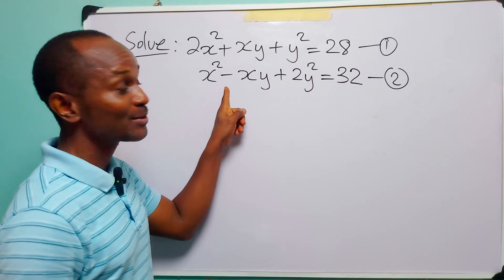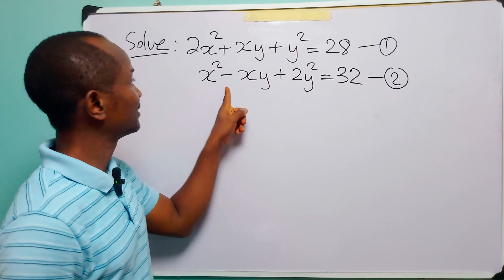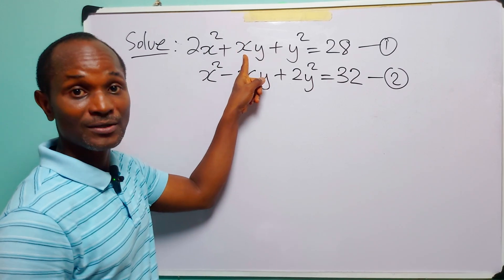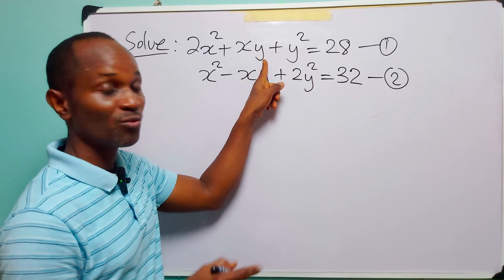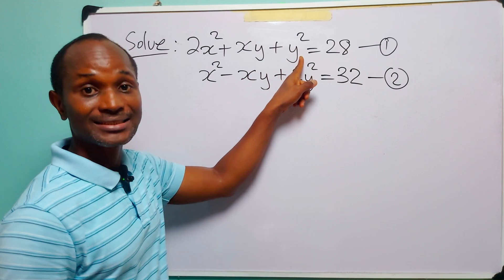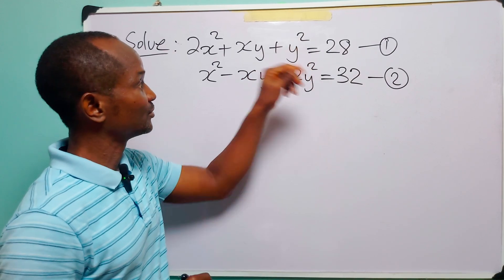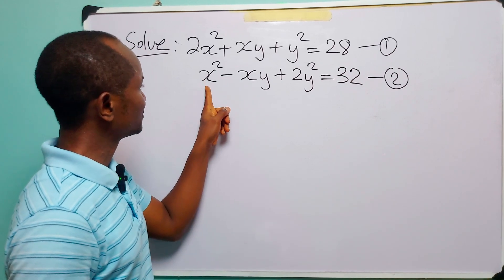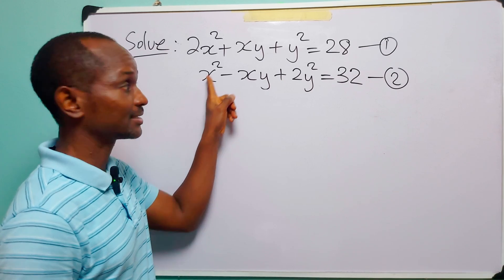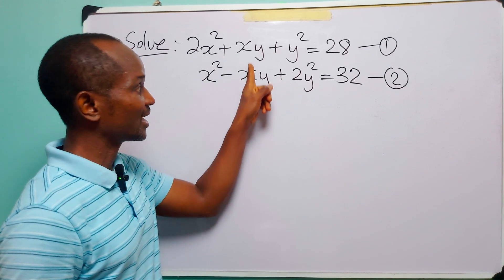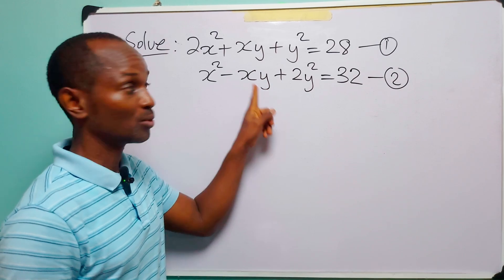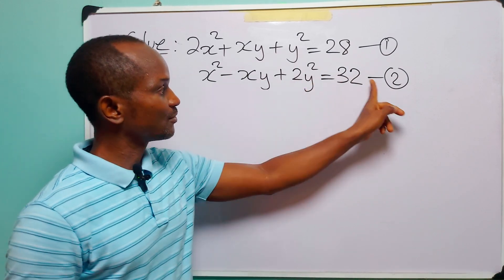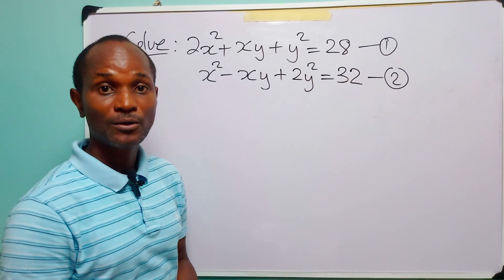Hello and welcome. A quick look at the equations on the board will show that they are both homogeneous. In the first equation, the power of x is 2 in the first term; in the second term the power of x is 1 and the power of y is 1, and 1 plus 1 is 2; and in the last term the power of y is 2. So the first equation is homogeneous to the second degree. Similarly, in the second equation the powers also sum to 2 in each term, so this equation is also homogeneous to the second degree.